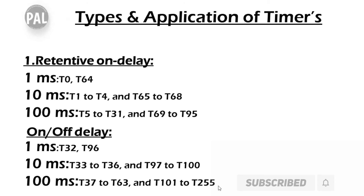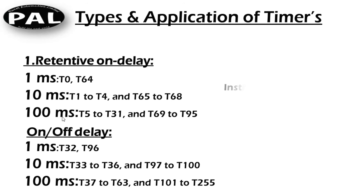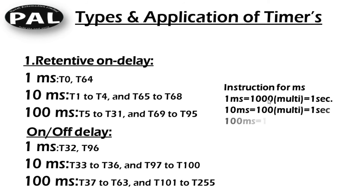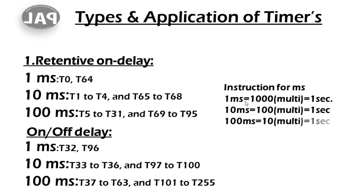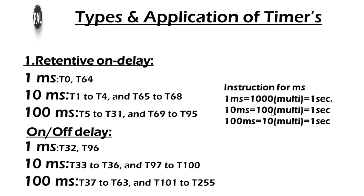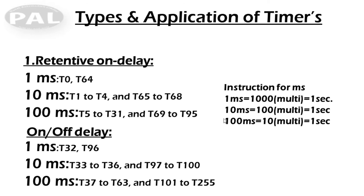Let me explain the timer resolution. 1 millisecond equals 10 to the power of minus 3, meaning one divided by 1000 of a second. So when using a 1 millisecond timer, you multiply by 1000 to get one second — 1000 equals 1 second. For a 10 millisecond timer, multiply by 100 to get one second. For a 100 millisecond timer, multiply by 10 to get one second.